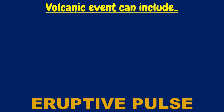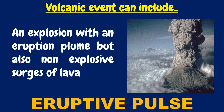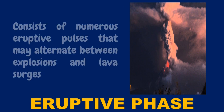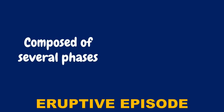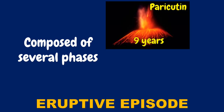Volcanic events can include eruptive pulses — essentially an explosion with an eruption plume — but also non-explosive surges of lava. A pulse may last a few seconds to minutes. An eruptive phase may last a few hours to days, consisting of numerous eruptive pulses alternating between explosions and lava surges. A single eruption or eruptive episode can last a few days, months, or years. Paricutin in Mexico was in eruption for 9 years, and Stromboli in Italy has been in eruption for over 2,000 years.